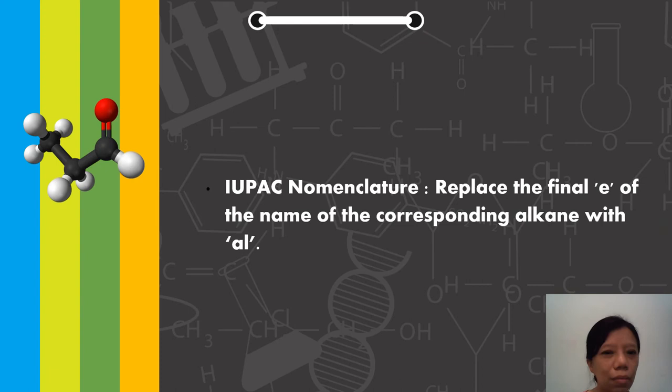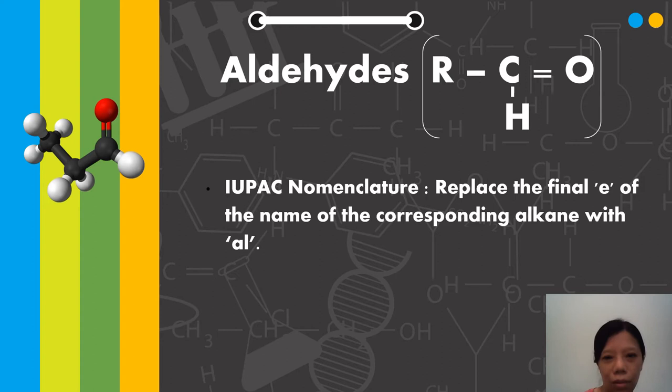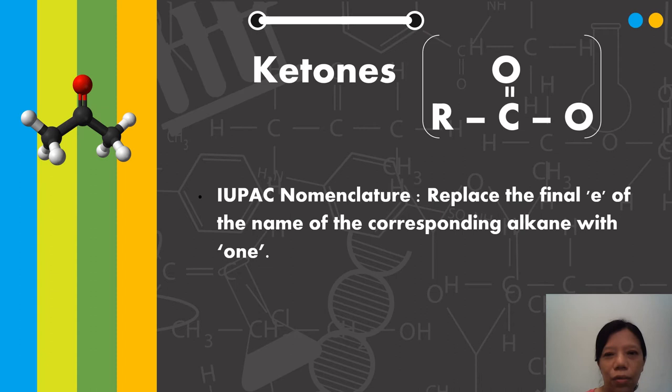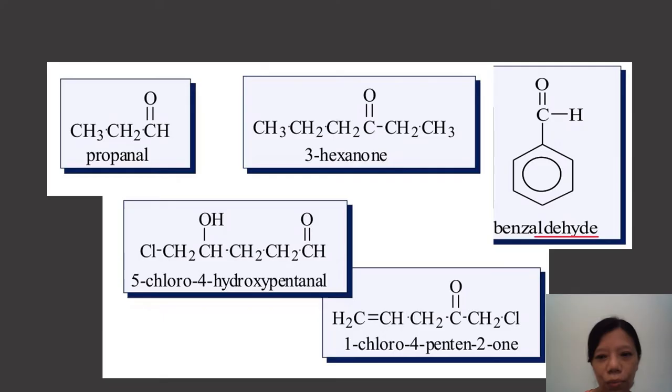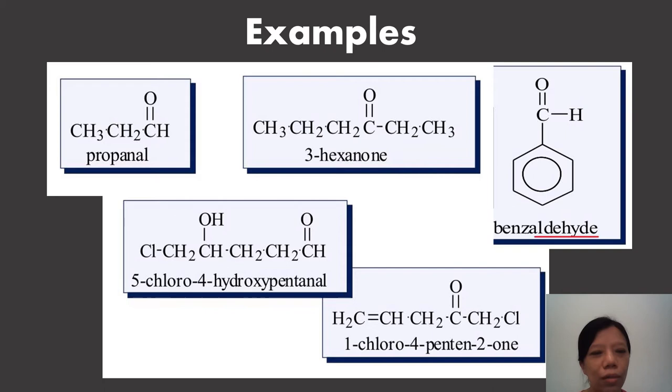Let's look at the nomenclature of carbonyl compounds. For the naming, you have to remove the E for aldehydes and replace with AL. For example, propane becomes propanal. For ketones, hexane becomes hexanone. For aldehydes, we don't need to give the number for functional groups because the aldehyde group is always at the end of the carbon chain.